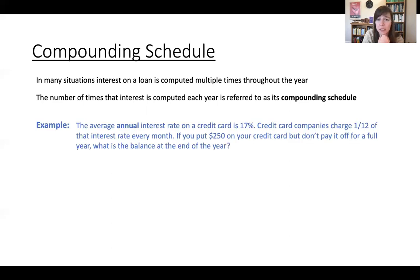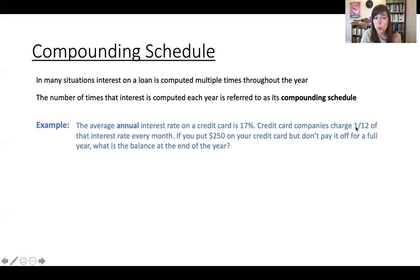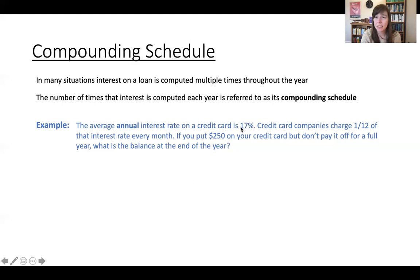Let's look at an example. The average annual interest rate on a credit card, at the time of making this video, is about 17%. Credit card companies charge one-twelfth of that interest rate every month. So if you put $250 on your credit card but don't pay it off for a full year, what's the balance at the end of the year? The credit card companies are calculating interest every month, and since 17% is an annual rate, they charge one-twelfth of that annual rate each month. So the compounding schedule is 12 times a year.